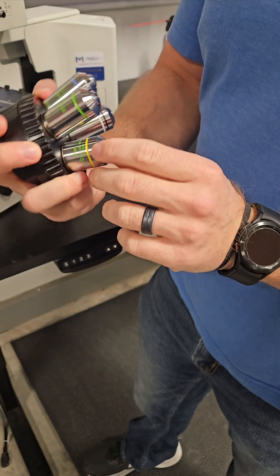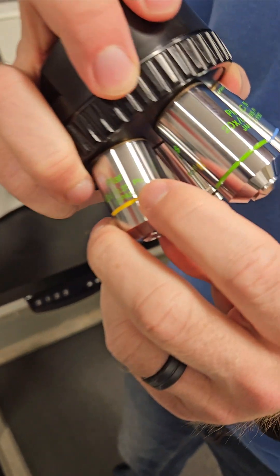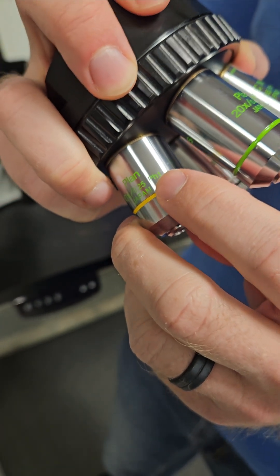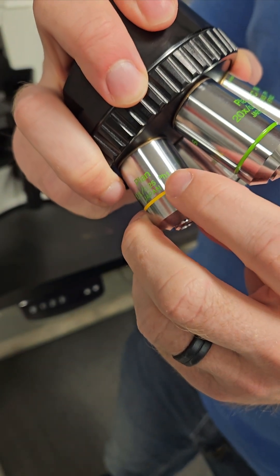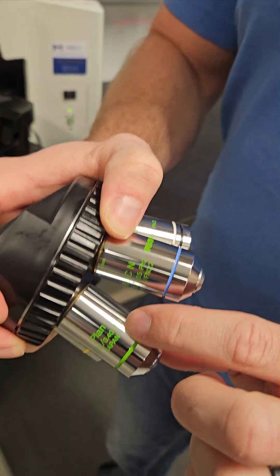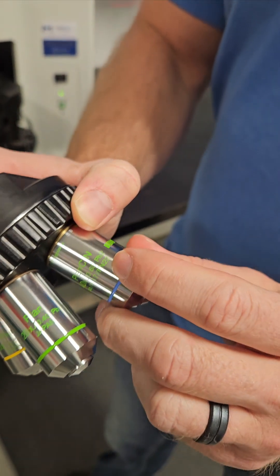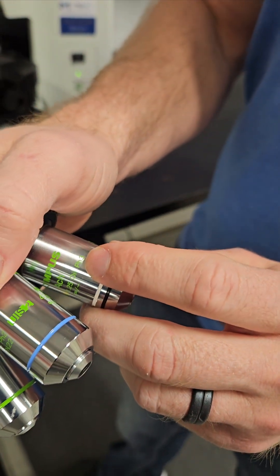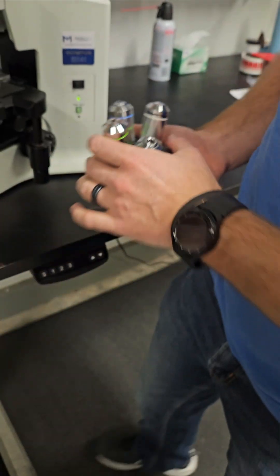So each one of these objectives, if you notice, have a PH on them. PH1, that stands for phase one, and it's going to correspond to the phase ring in the condenser. PH1 for the 20, PH2 for the 40, and PH3 for the 100.